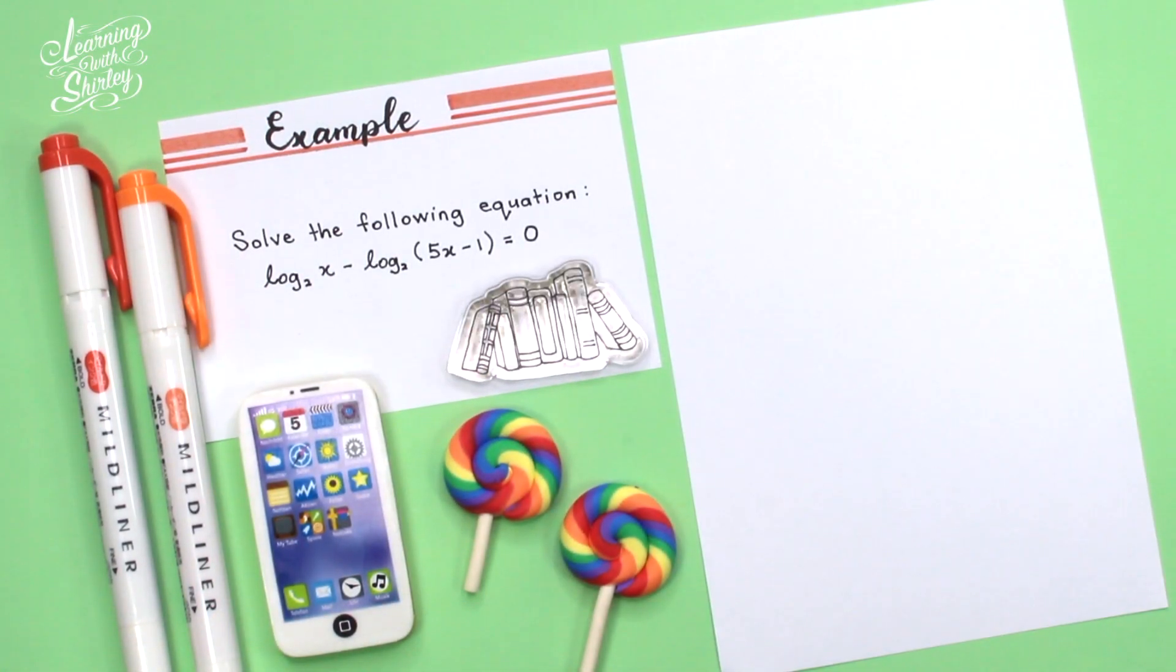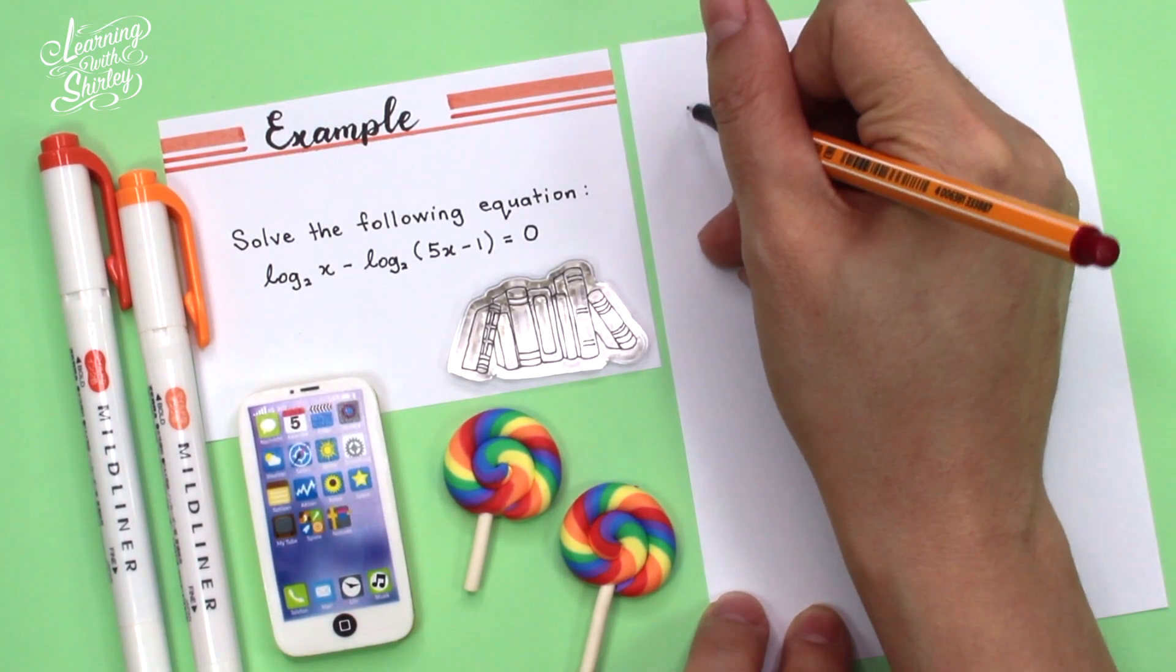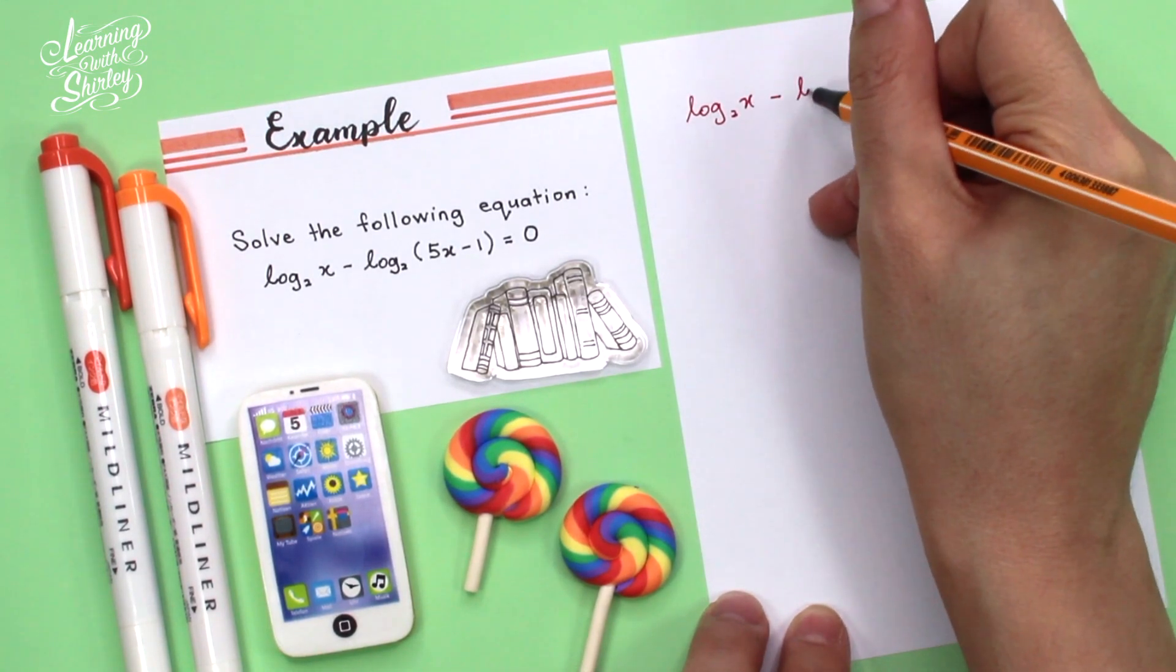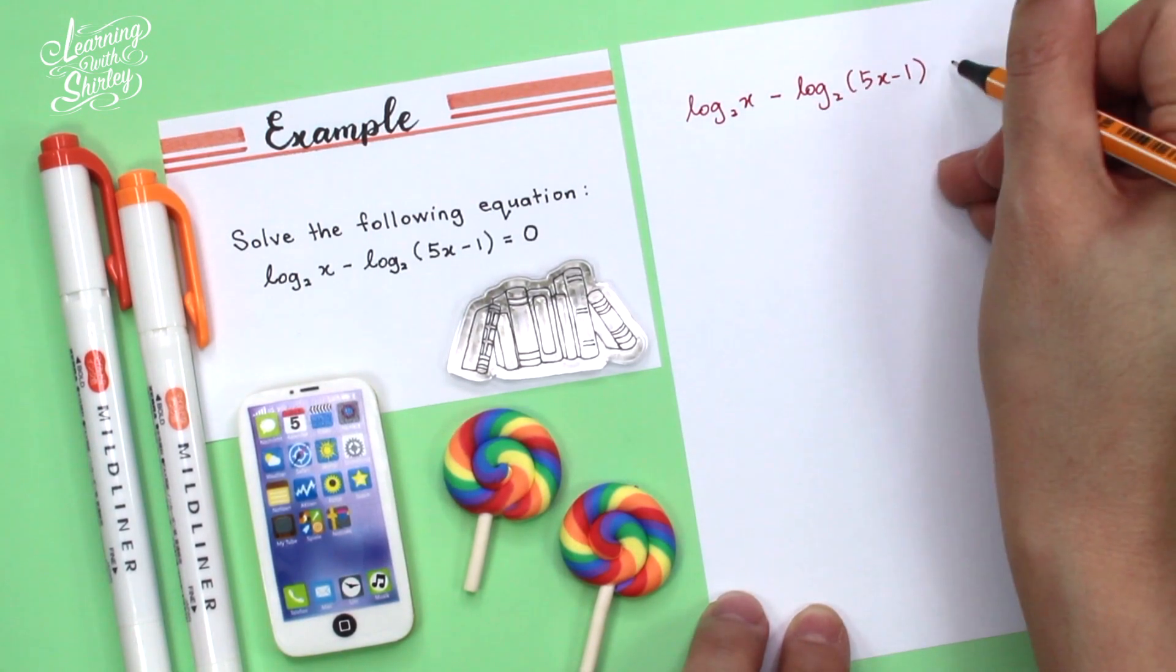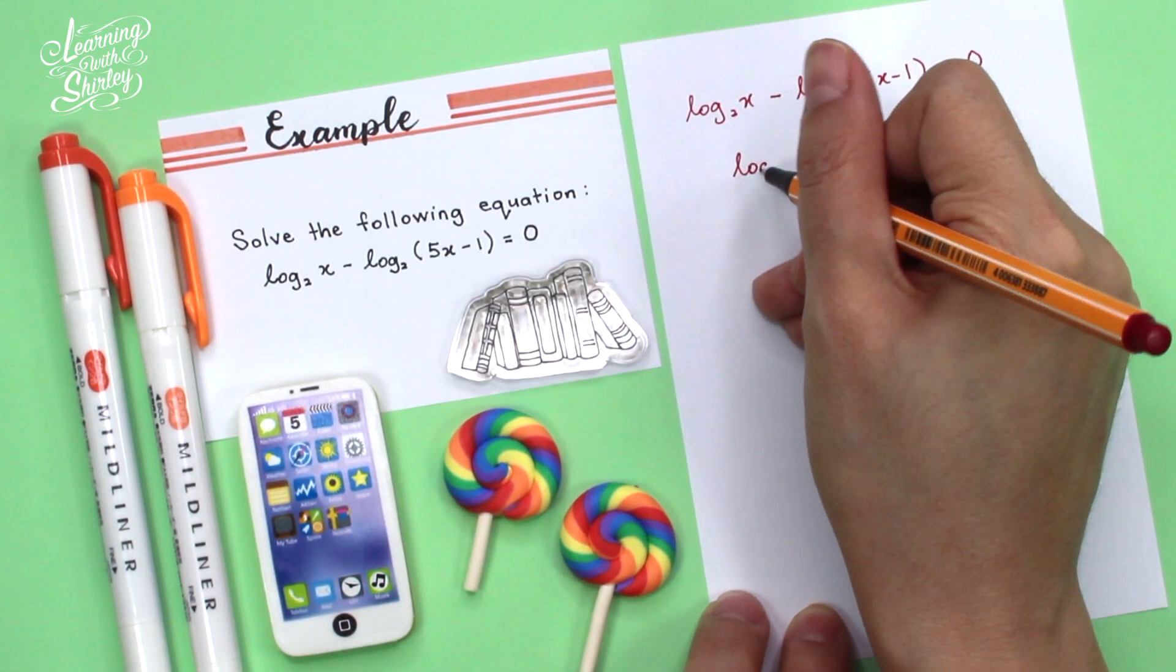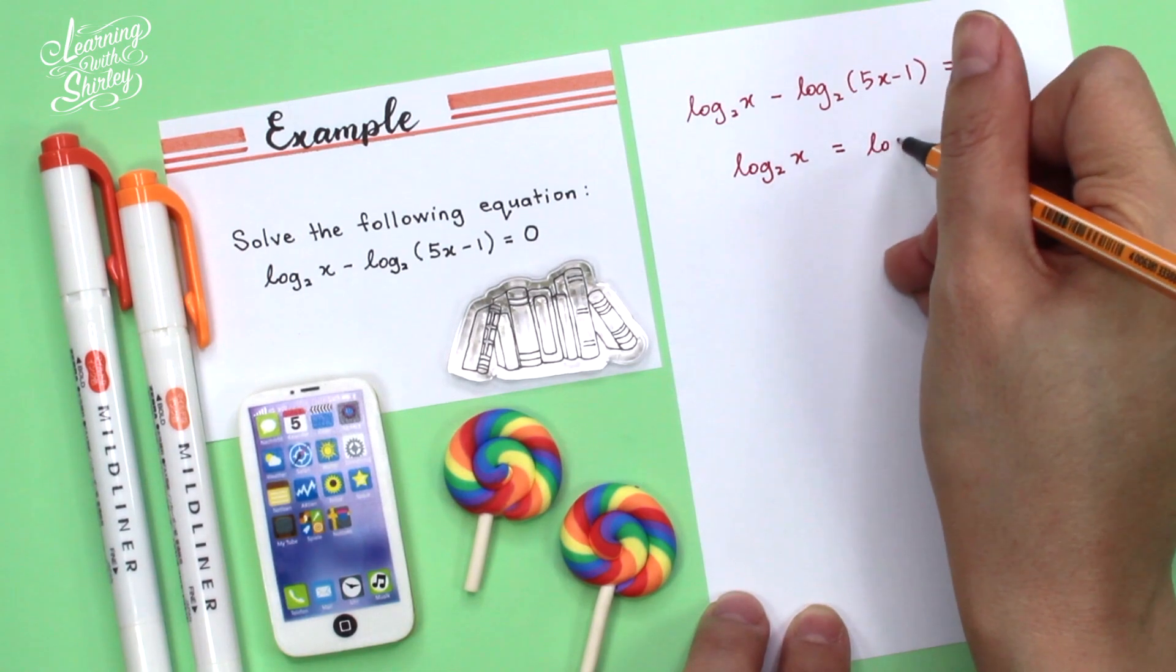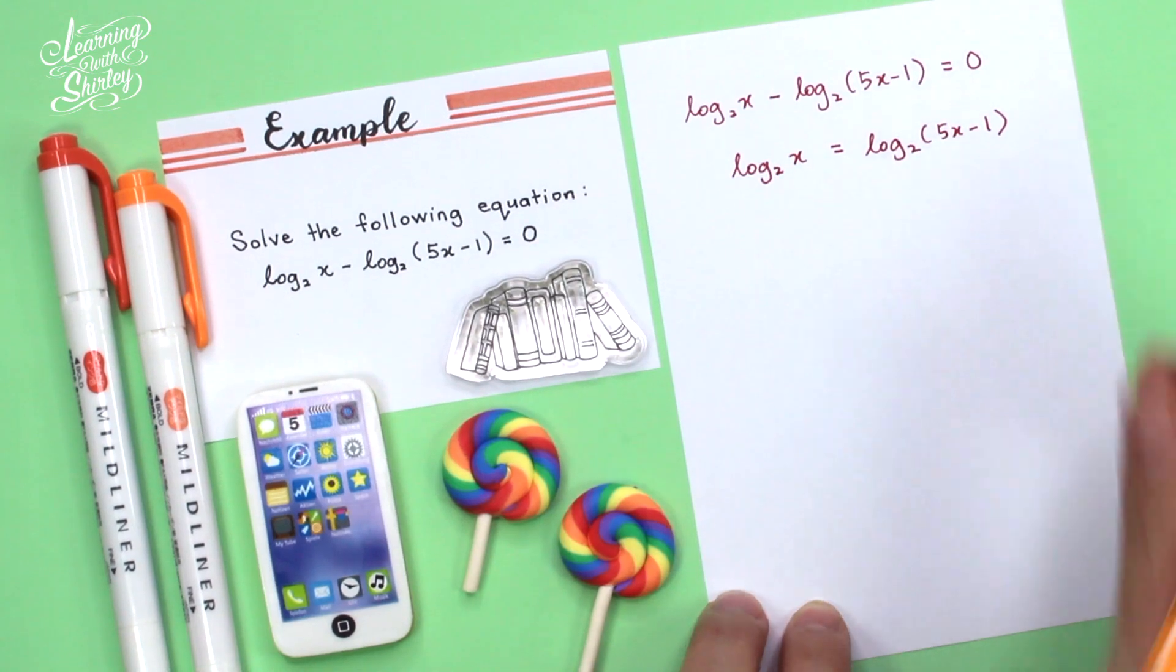Solve the following equation: log x base 2 minus log 5x minus 1 base 2 equals to 0. So first of all, I'm going to write down the equation here, which is log x base 2 minus log 5x minus 1 base 2 equals to 0. And then, next step is I'm going to shift this over to the right-hand side. So we'll get log x base 2 equals log 5x minus 1 base 2.